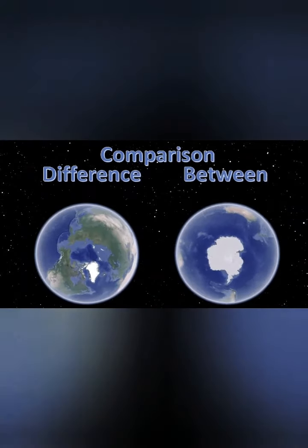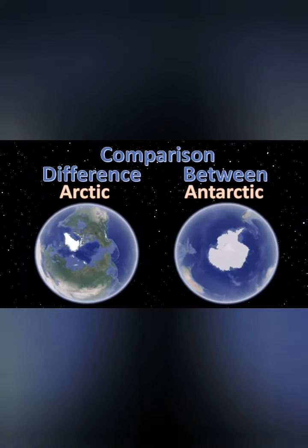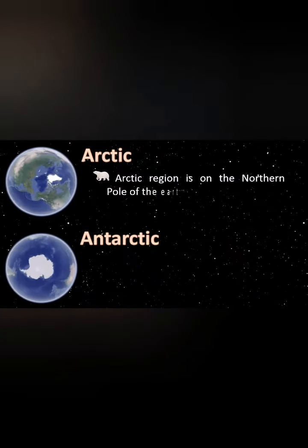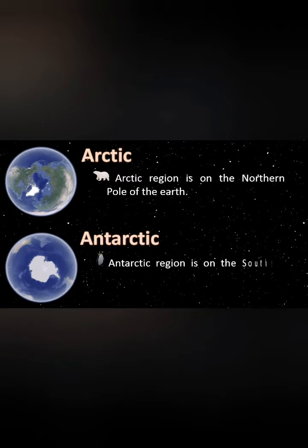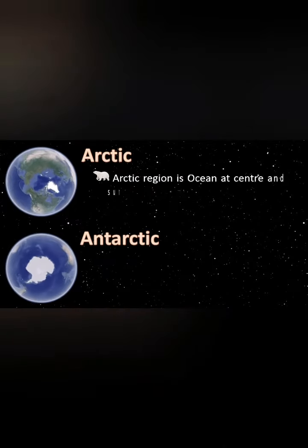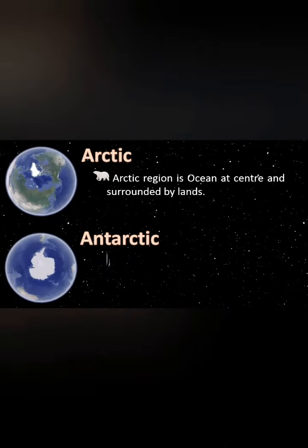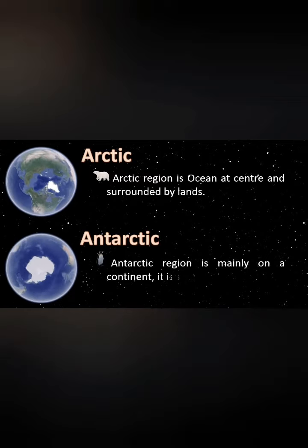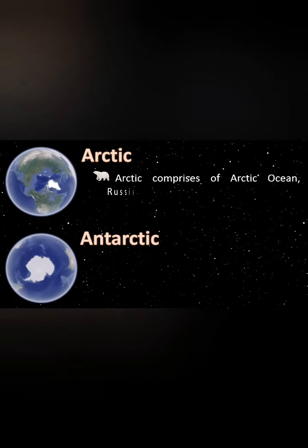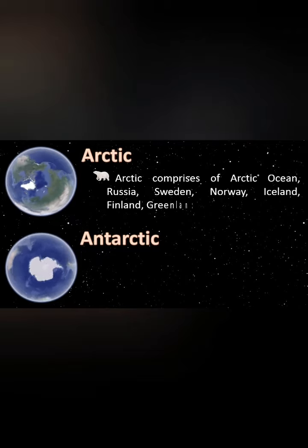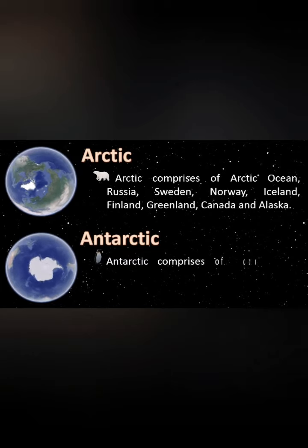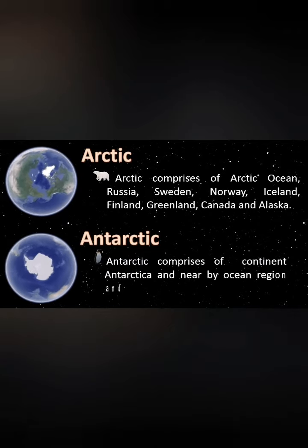Here is a comparison between the Arctic and Antarctic regions. The Arctic region is at the northern pole of the Earth, while the Antarctic region is at the southern pole. The Arctic has ocean at its center surrounded by lands, while the Antarctic is mainly a continent surrounded by ocean. The Arctic comprises the Arctic Ocean, Russia, Sweden, Norway, Iceland, Finland, Greenland, Canada and Alaska. The Antarctic comprises the continent of Antarctica and nearby ocean regions and islands.